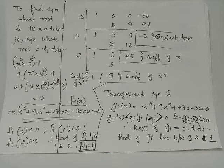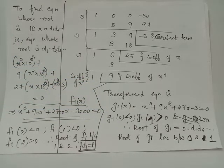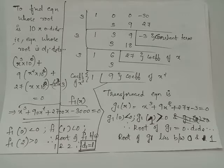In the first step we get -3, which is the constant term. In the next step we get 27, which becomes the coefficient of x. In the next step we get 9, which becomes the coefficient of x², and the coefficient of x³ equals 1. Thus we arrive at the transformed equation g1(x) = x³ + 9x² + 27x - 3 = 0. We can confirm that the root of g1 lies between 0 and 1, since g1(0) < 0 and g1(1) > 0.